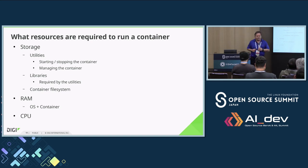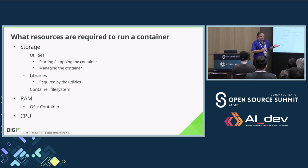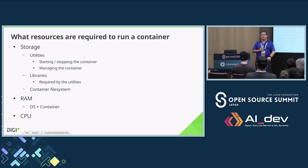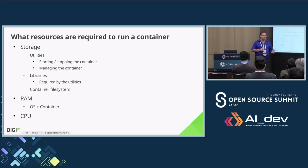What resources on our resource-constrained device are actually required to run a container? Pretty obvious: storage, RAM, and CPU - that's pretty much all you've got anyway. In terms of storage, you've got to store the utilities to make the container run in your flash image - starting, stopping, managing. You also need libraries. The other one is the container file system - you actually have to store your container on the device. In terms of RAM, you need enough to run all the processes you want. And the CPU - especially on that little one with a single CPU - if you can physically run it on the device, it runs.